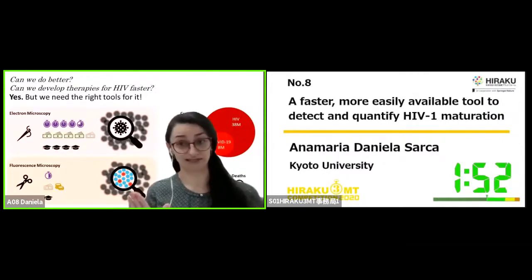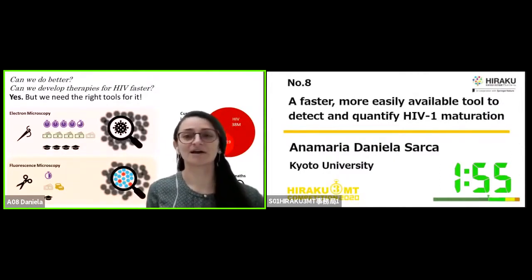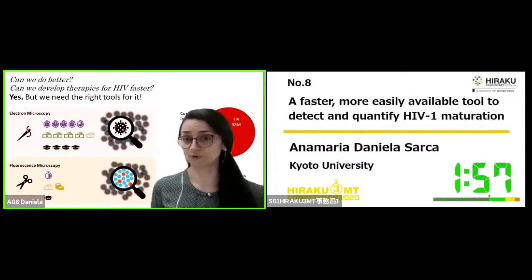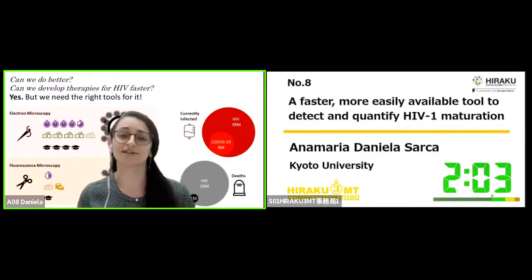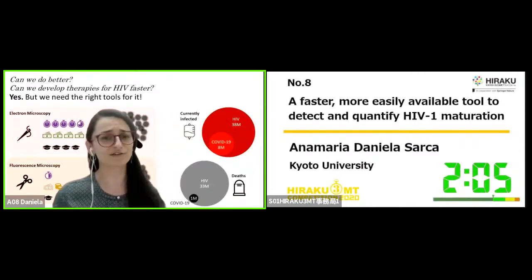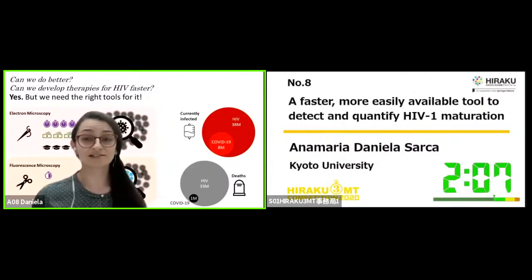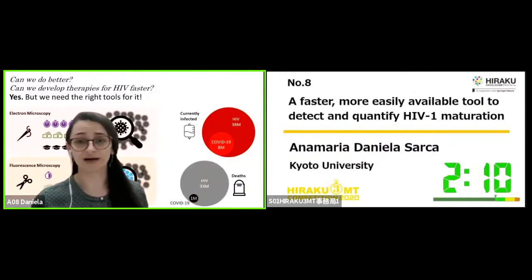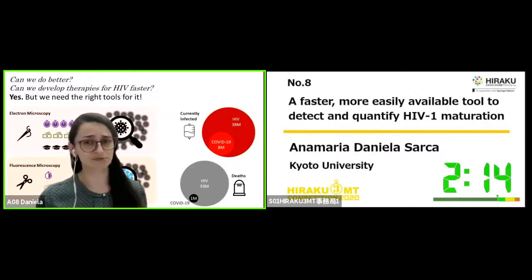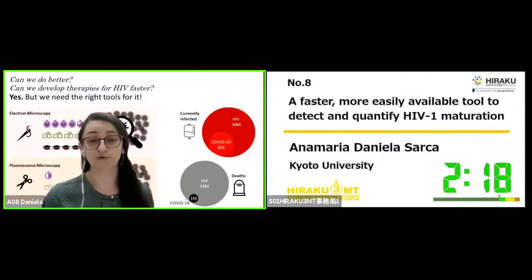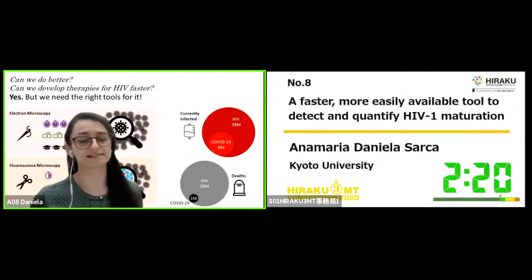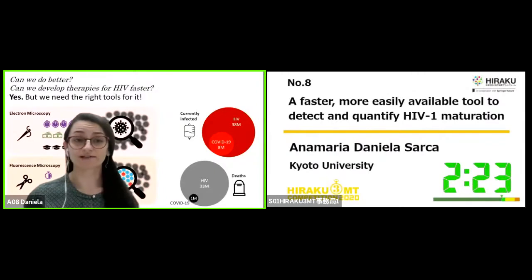Now, I know what you're thinking: we are literally living through a pandemic — why am I not developing tools against the coronavirus instead? Well, many people may not know this, but HIV also once started as a pandemic and it never really stopped. There are still 38 million people living with HIV right now and 33 million people have died because of it. For a little perspective, there were 8 million people with active COVID about a month ago and 1 million deaths. And HIV cannot be cured yet.